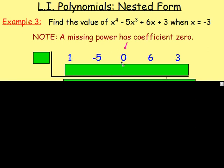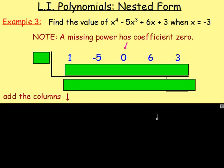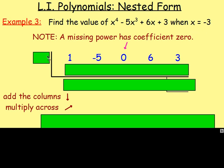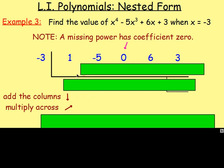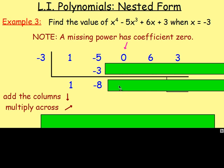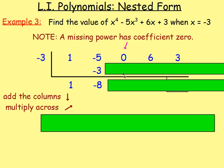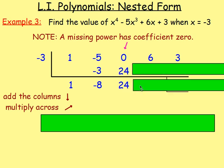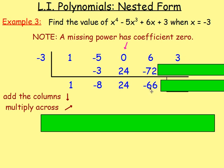So coefficients, we've got 1, then negative 5, then 0. Make sure you include that. And then 6, and then 3. We're wanting to evaluate this when x is negative 3, so we put a negative 3 here. And then work our way across. Add the columns: 1 add 0 gives you 1. Multiply across: negative 3 times 1 is negative 3. Add these together: negative 5 add negative 3 is negative 8. Multiply across: negative 3 times negative 8 gives you 24. Add them: still gives you 24. Multiply across: negative 3 times 24 gives negative 72. If you add them, you end up with negative 66. Multiply negative 3 by negative 66, two negatives make a positive, gives you 198. And then if you add them, you'll end up with 201.